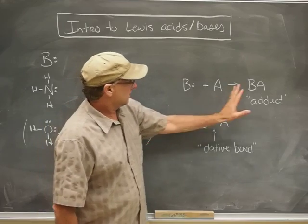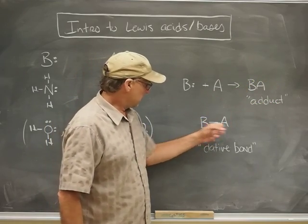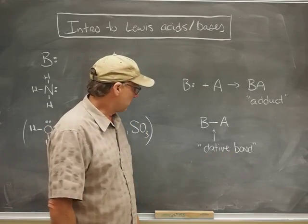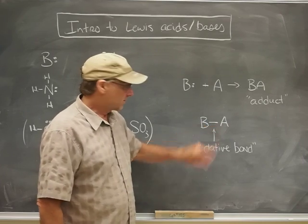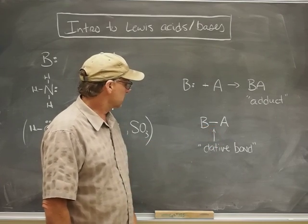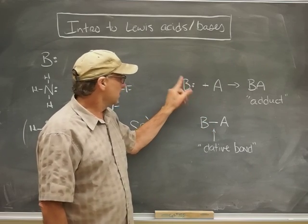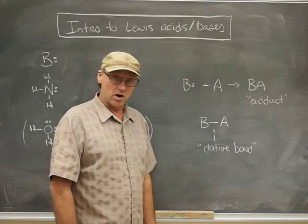The thing to note about the adduct is that there is a bond between the B and A. And that bond also has a special name. It's called a dative bond. And finally, the electrons that go into making that bond, its two electrons, are the same as those electrons right there. That is to say, the Lewis base provided the electrons to make the dative bond.